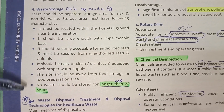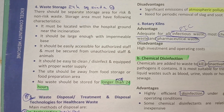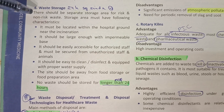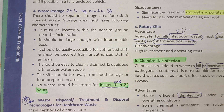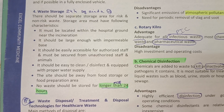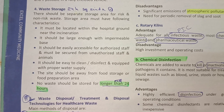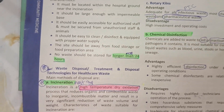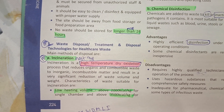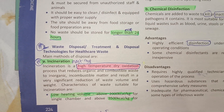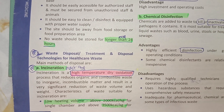To summarize — this is also an important MCQ point — the steps are: segregation, collection, transport (on-site and off-site), and storage. Waste disposal will be discussed in the next video, where further points will be covered.